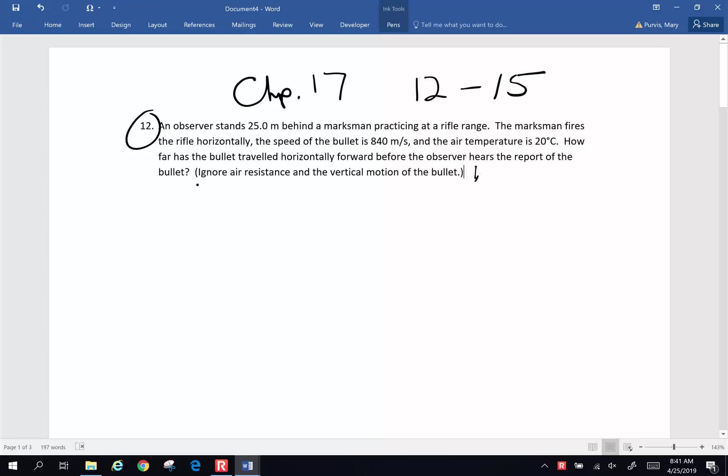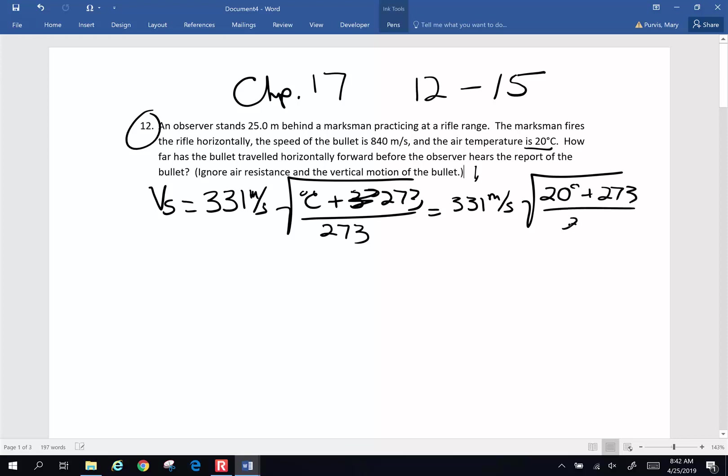So if you are told a temperature of the air, you're going to need to calculate the velocity of sound on that day. The equation for that is 331 meters per second times the square root of the temperature in degrees Celsius plus 273, to put it into Kelvin, divided by 273. So this is going to be 331, which is the velocity at 0 degrees Celsius, times the square root of 20 degrees Celsius, plus 273, to convert it into Kelvin, divided by 273.